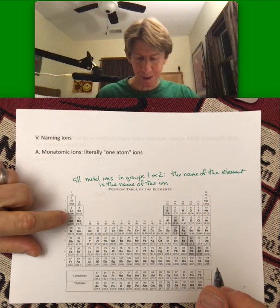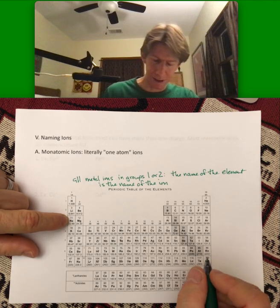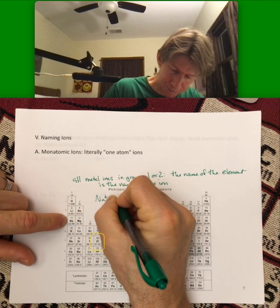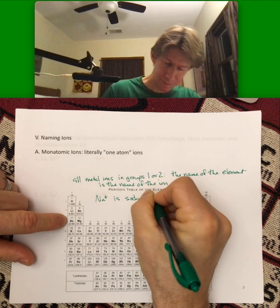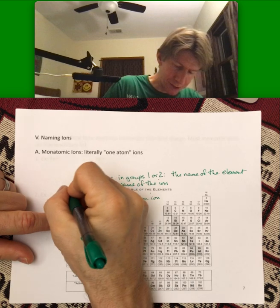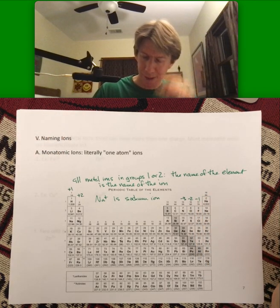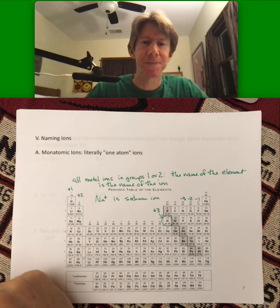So here's sodium. The ion is named the sodium ion. And we know that all these are plus one, these are plus two, minus three, minus two, minus one. Oh, plus three, aluminum.